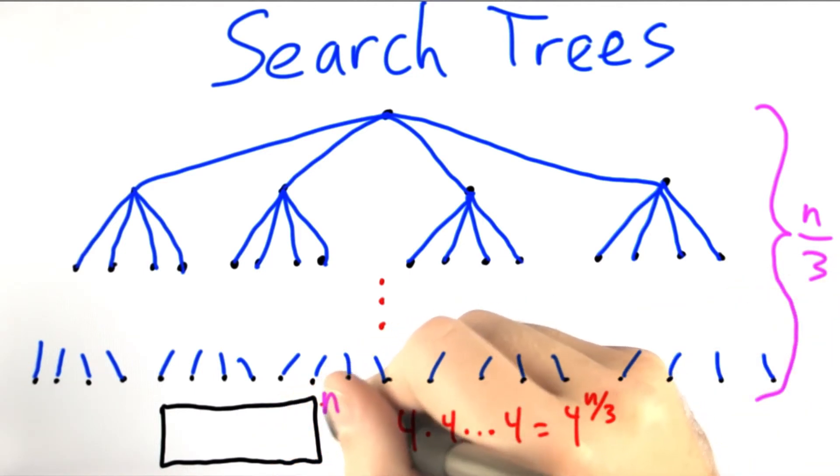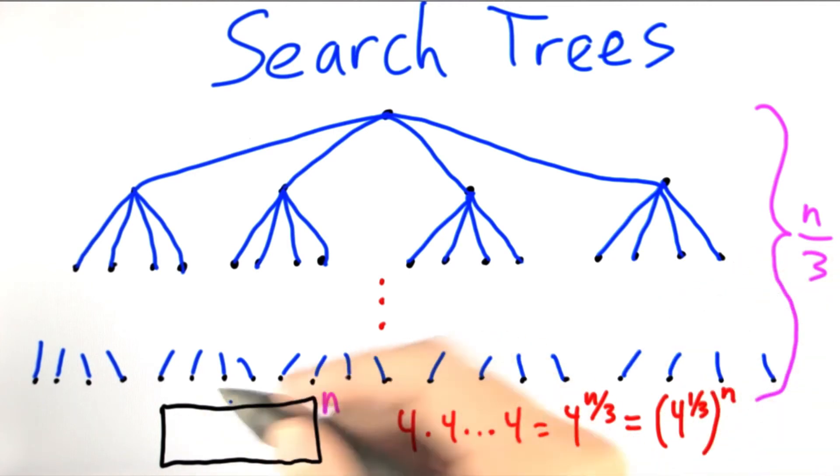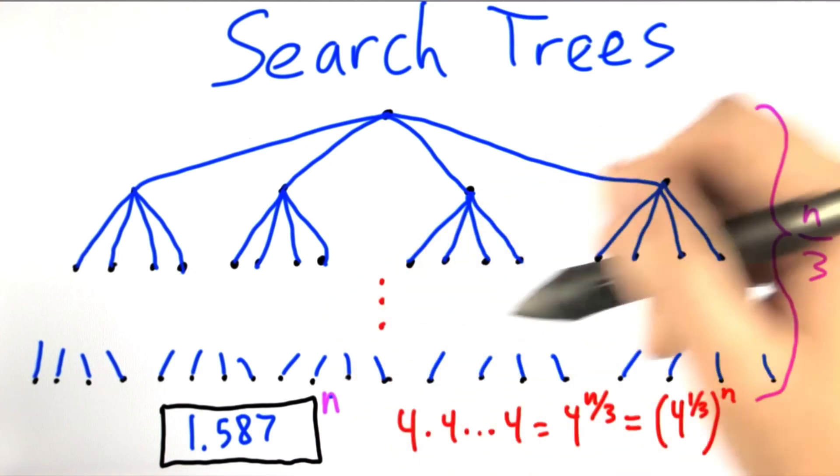Now, I had you pull out to the nth power here, so let's go ahead and do that. So this is really 4 to the 1/3 to the nth power. And that is approximately 1.587 to the nth power.